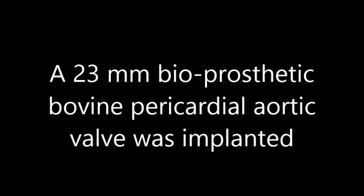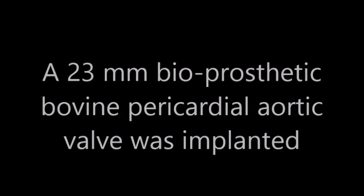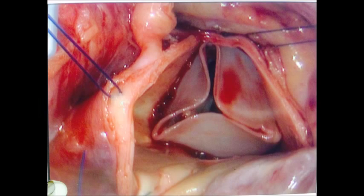A 23 mm bioprosthetic bovine pericardial aortic valve was implanted without any issues. The aorta was then closed and the patient was weaned from cardiopulmonary bypass.